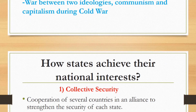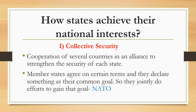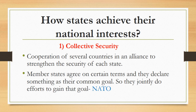Now we will see how states achieve their national interests. The first way is collective security — a cooperation of several countries in an alliance to strengthen the security of each state. Member states agree on certain terms and declare a common goal, then jointly work to achieve it. Examples include NATO, the League of Nations after World War One, and the United Nations in current times.